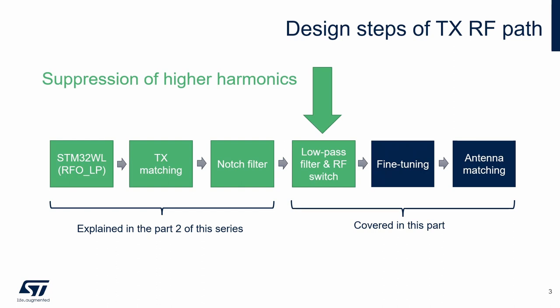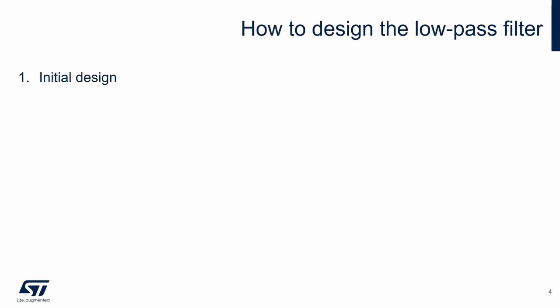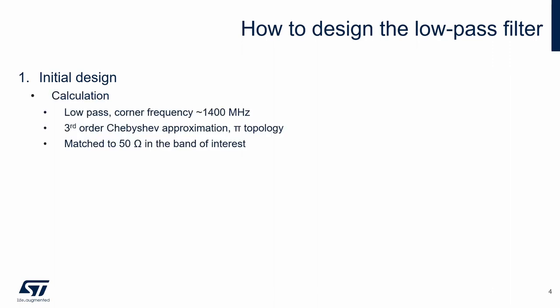We start with the low-pass filter and RF switch. The main purpose of this block is to suppress higher harmonics. The first step is initial design of the filter. The low-pass filter can be calculated with design parameters: corner frequency about 1400 MHz, third-order Chebyshev approximation with pi topology and matching 50 ohms in the band of interest. The filter design can also be reused from existing similar designs, making calculation unnecessary.